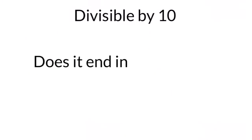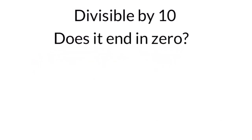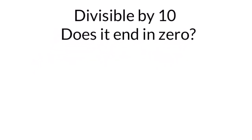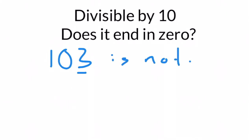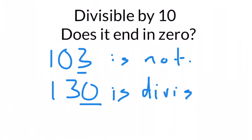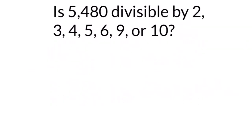The last rule: divisible by ten is easy as well. Does it end in zero? If it ends in zero, it is divisible by ten. For example, 103 is not divisible by ten because it ends in a three, but 130 is divisible by ten — it's 13 times ten and ends in a zero.